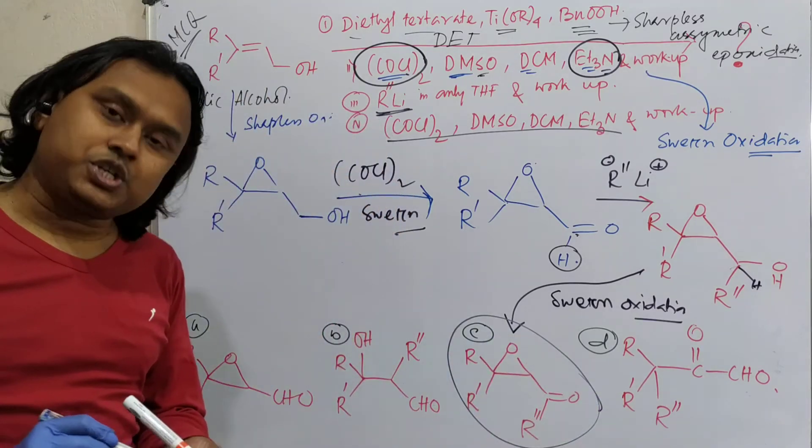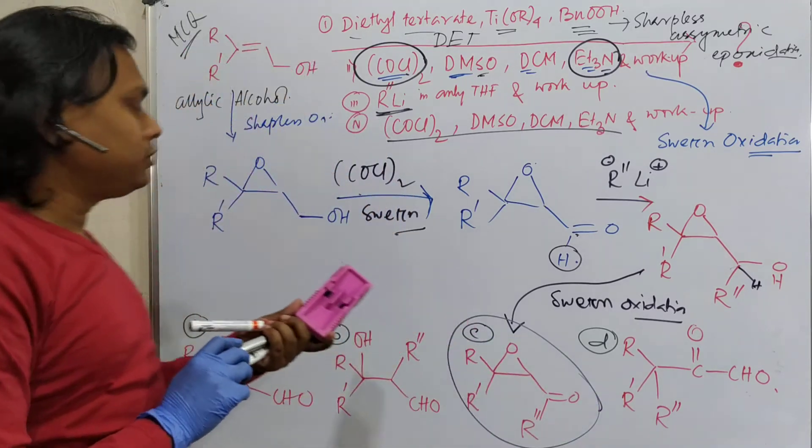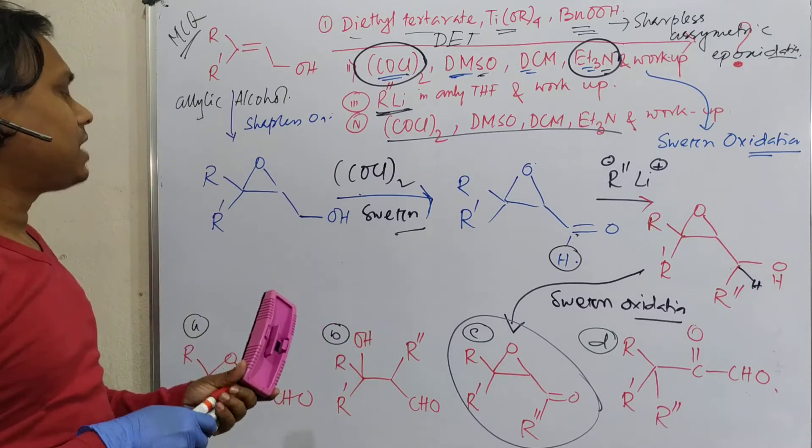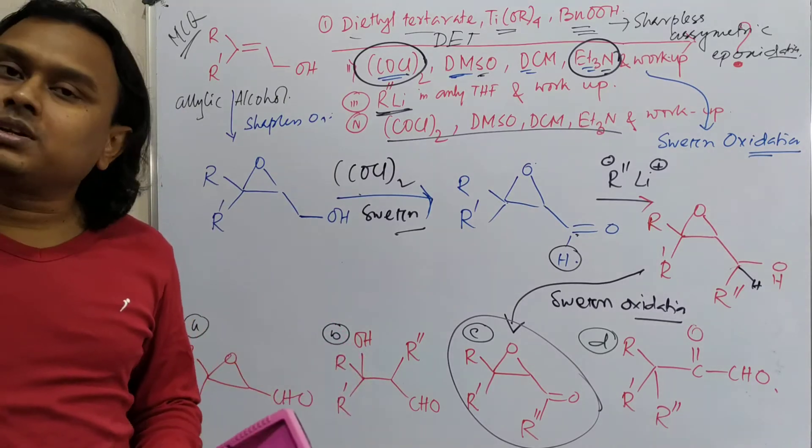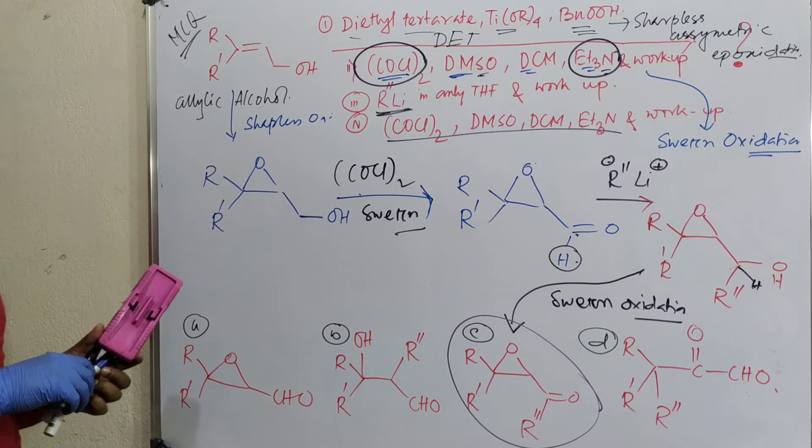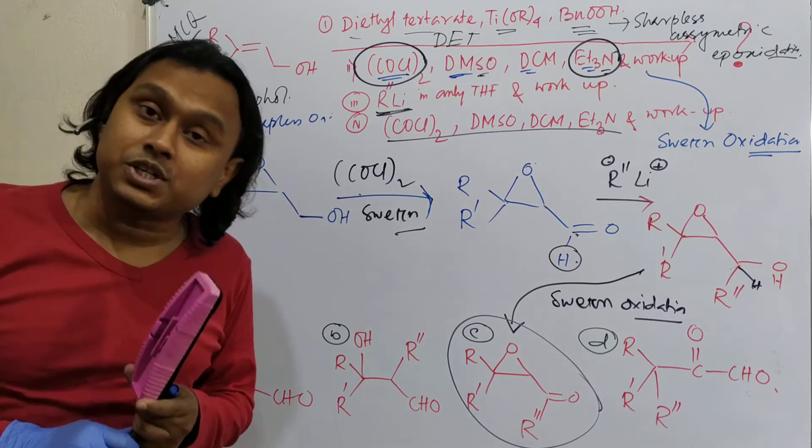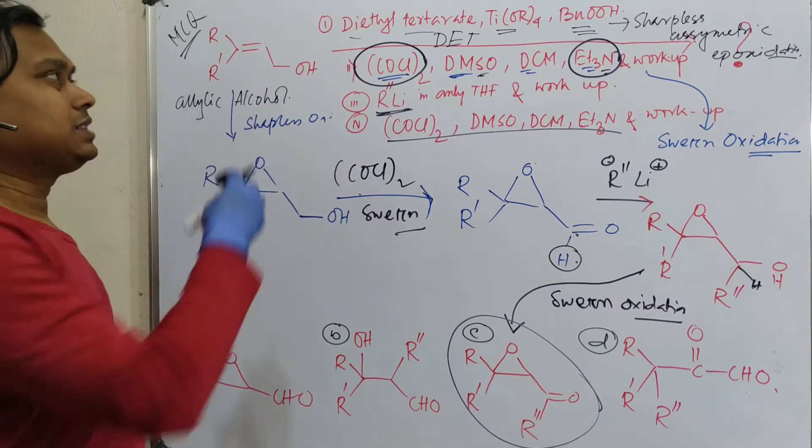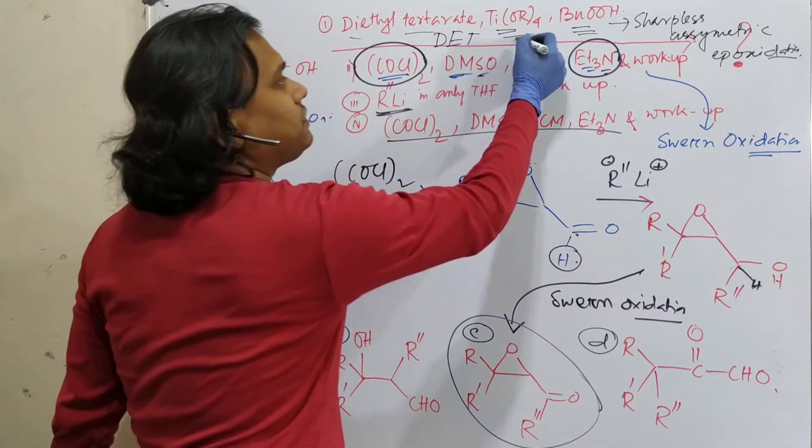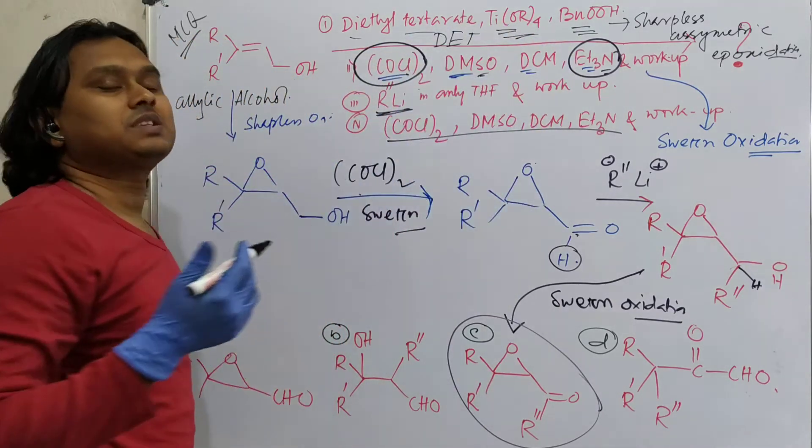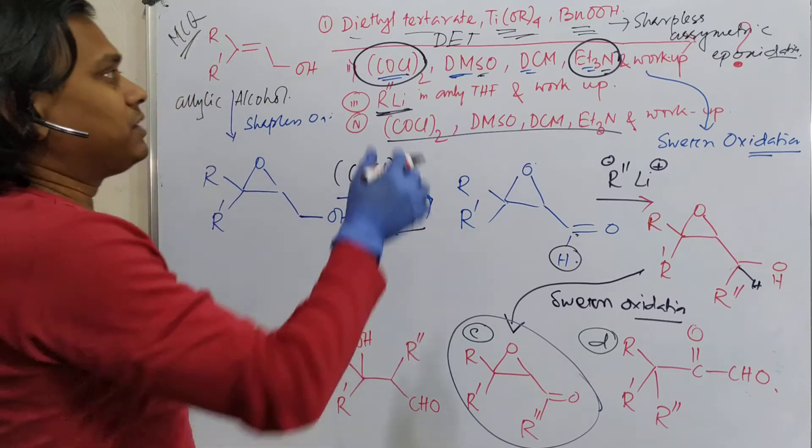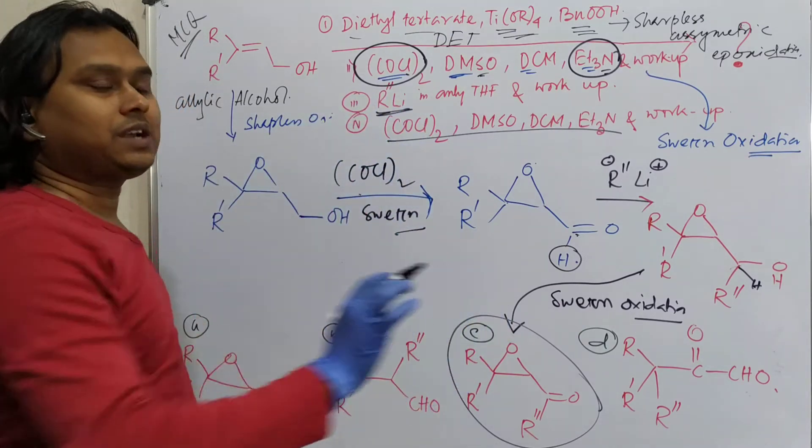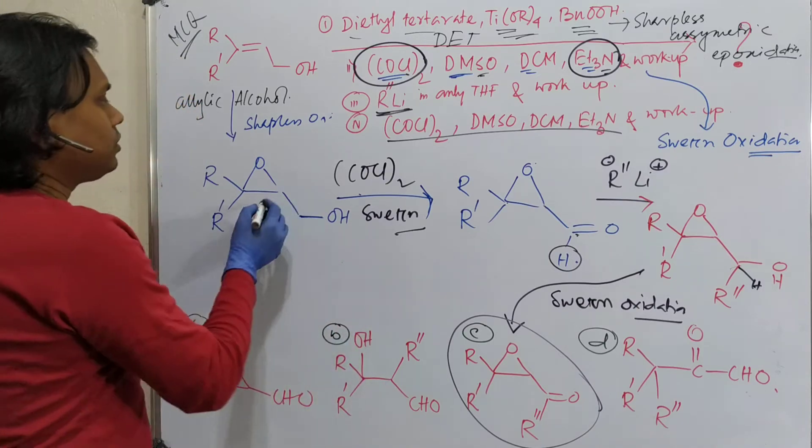Now question, if this question is provided in your exam, within less than 30 seconds, how can you solve the question? For this thing, you have to know the reagents and reaction conditions, and reactivity or nature of the molecule. This is the allylic alcohol, and you have given this condition, means Sharpless asymmetric epoxidation, but since no asymmetry is mentioned in the product, forget about it, it's easier. So it is an epoxide.